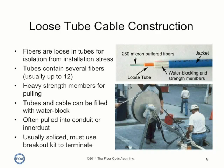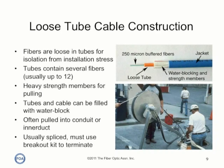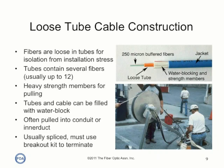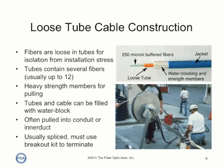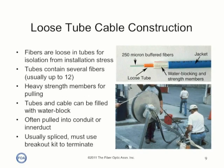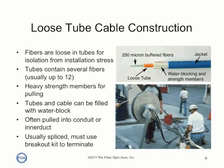The fibers are only coated with a primary buffer coating of 250 microns diameter to keep the cable size small, but each are color coded. Loose tube cable is usually spliced and the splice is stored in splice closures, or the fibers are spliced to pigtails for termination.